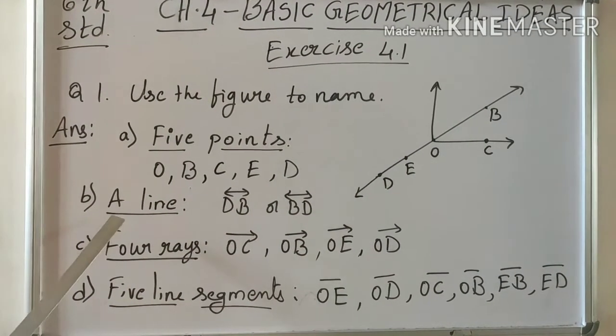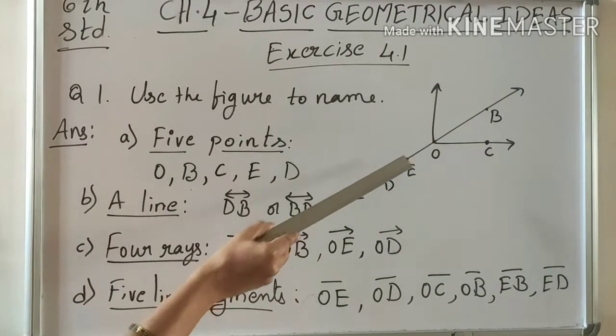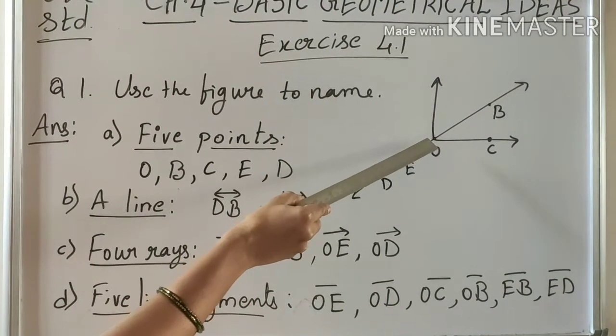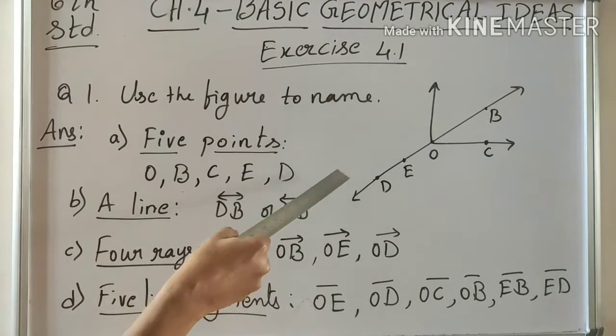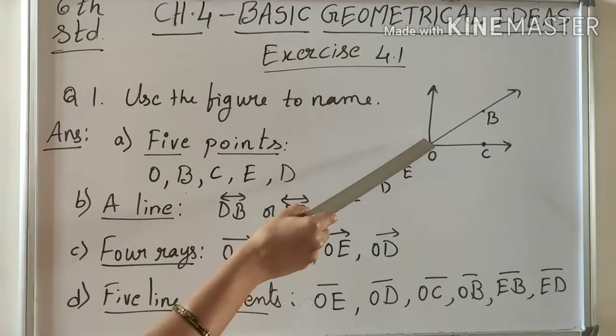And lines: are there any lines? Yes. DB is a line. This line goes in two directions. DB or BD, we can say either. This is a line.